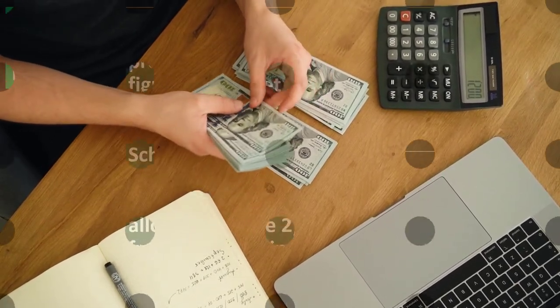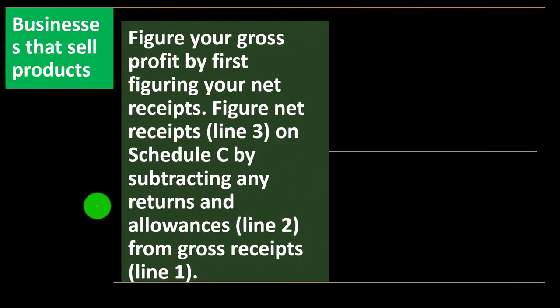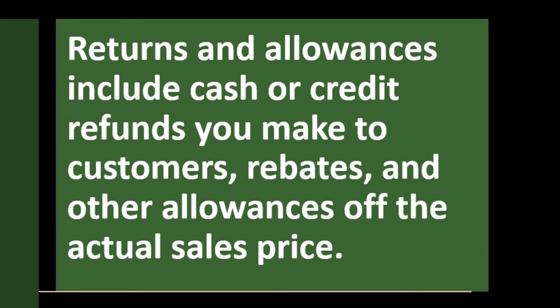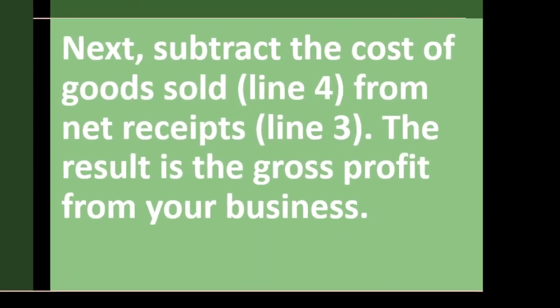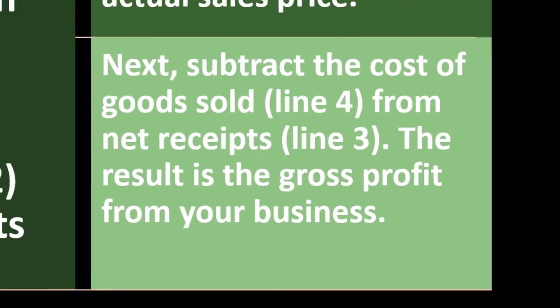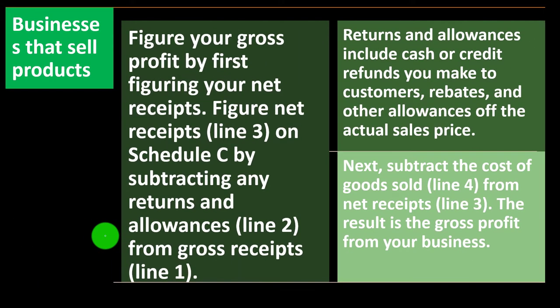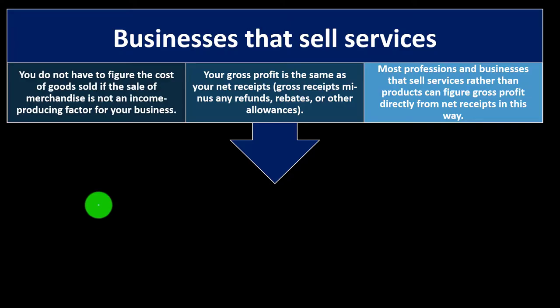On Schedule C, subtract returns and allowances on Line 2 from gross receipts on Line 1. Returns and allowances include cash or credit refunds you make to customers, rebates, and other allowances off the actual sales price. Then subtract cost of goods sold on Line 4 from net receipts on Line 3. The result is the gross profit from your business.